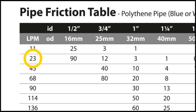If we keep the flow rate the same, but double the pipe diameter to 1 inch, friction loss reduces to only 3 metres. That's a huge difference!